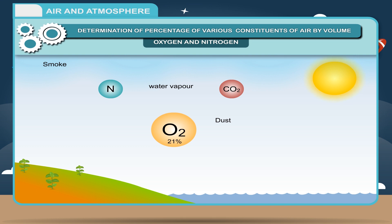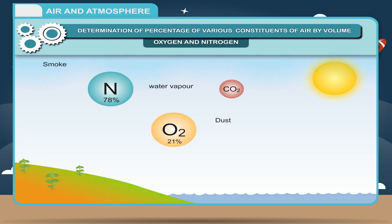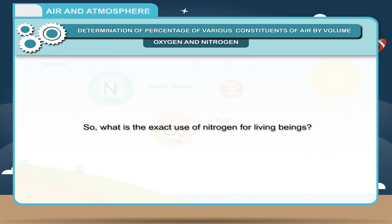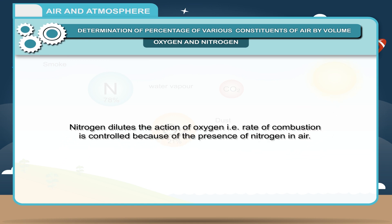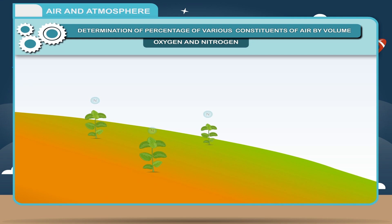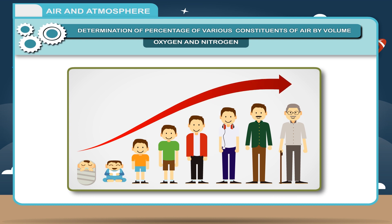Four-fifths of air is composed of gases which do not support burning. Since air contains 78% nitrogen, nitrogen is neither a supporter of burning nor of life. Nitrogen dilutes the action of oxygen, controlling the rate of combustion. It also indirectly reaches plants and is used to make proteins, which are building blocks of all living beings.